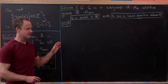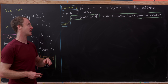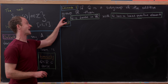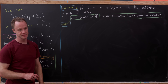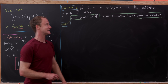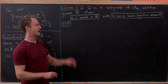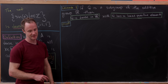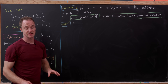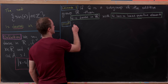I like this result because it mixes group theory with things you might see in analysis. It says that if G is a subgroup of the additive group of real numbers, then G is dense in ℝ or G has a least positive element — and this is an exclusive or, so it's impossible for both to happen at the same time.